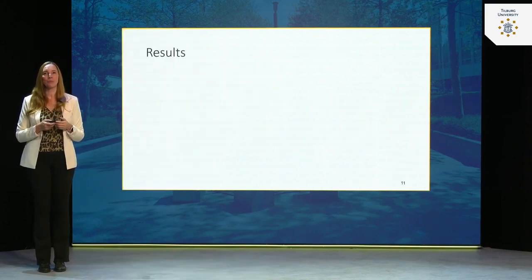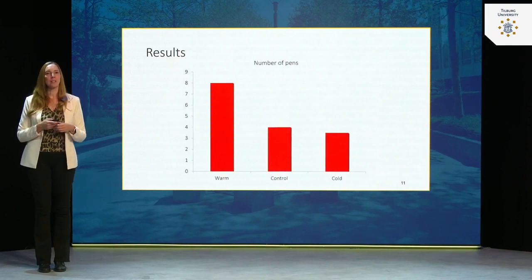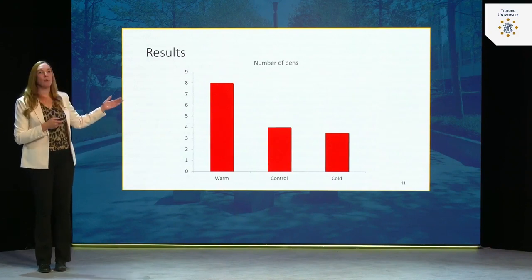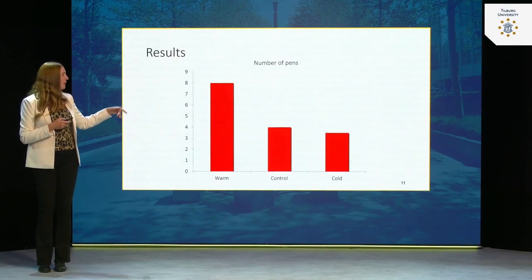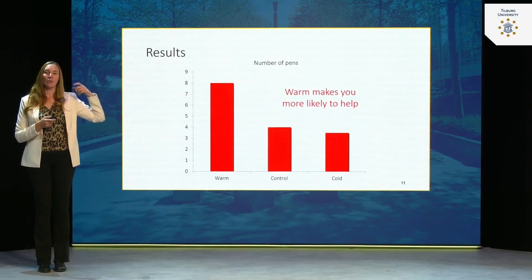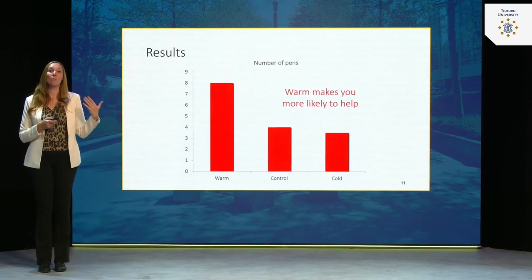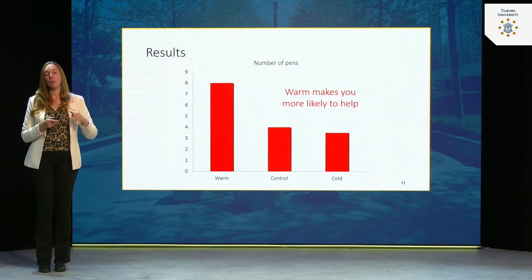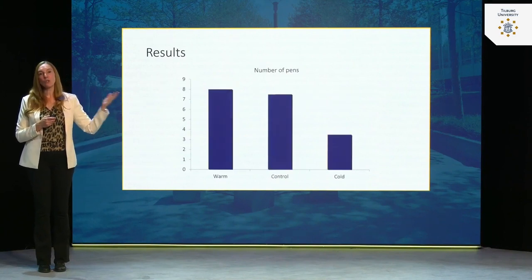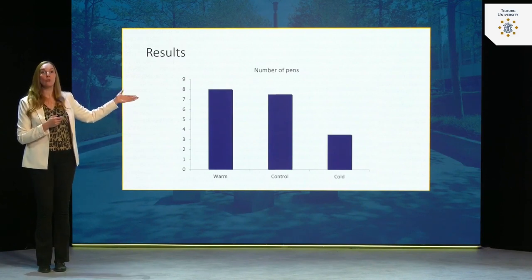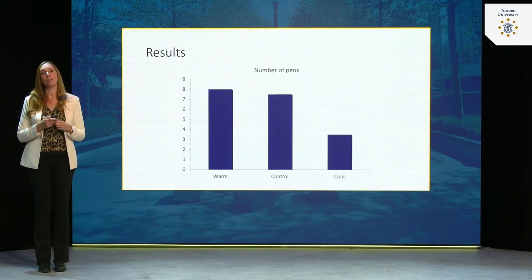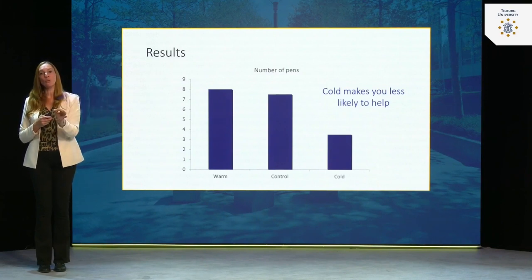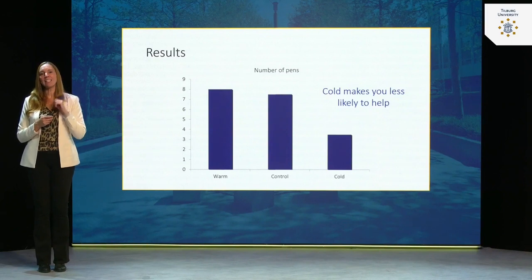Let's improve the experiment by creating three groups: one group in a warm room, one in a cold room, and a third in a room with normal, unaffected temperature — a control condition. By adding this control condition, we can actually see whether people become more helpful in a warm room or less helpful in a cold room. If the control group behaves similarly to the cold condition, we conclude that being in a warm room makes you more helpful. If the control group behaves similarly to the warm condition, the conclusion is that being in a cold room makes you less likely to help — a vitally different conclusion.